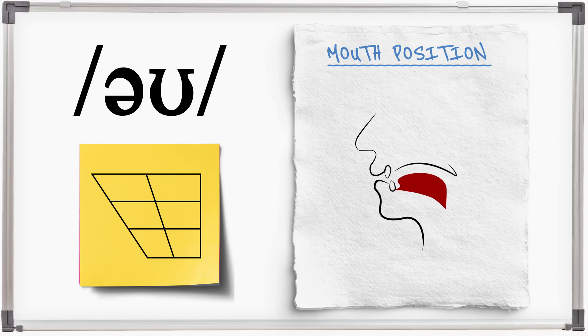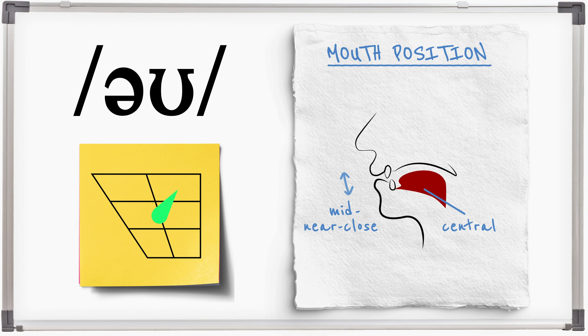O is a diphthong vowel sound that moves from a central, mid position to a near close, near back position, O.